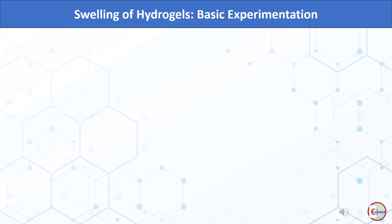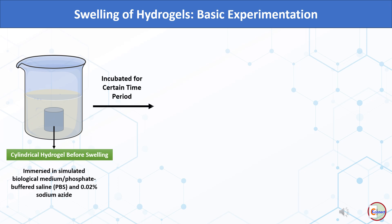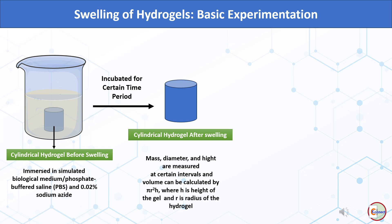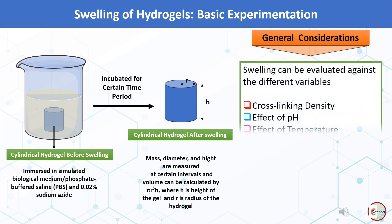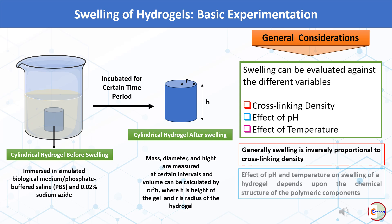To measure swelling quantitatively, a cylindrical hydrogel is immersed in a suitable medium and incubated for a certain period. After the specified period, the hydrogel is removed and its mass, diameter, and height are measured. Volume is calculated by π r² h, where h is the height and r is the radius. By comparing the volume before and after immersion, the swelling ratio is determined. Swelling can be evaluated against variables such as cross-linking density, pH, and temperature. Generally, swelling is inversely proportional to cross-linking density, while the effects of pH and temperature depend on the chemical structure of the polymeric components.